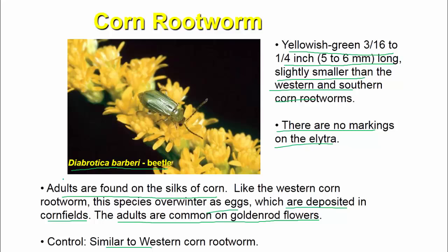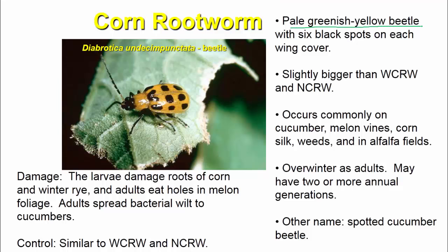Next is the pale greenish-yellow beetle with 6 black spots on each wing. It is slightly bigger than the western and northern corn rootworms. It occurs commonly on cucumber, melon, beans, corn, silk weeds, and alfalfa fields. It overwinters as adults and may have 2 or more annual generations. Its other name is the spotted cucumber beetle.